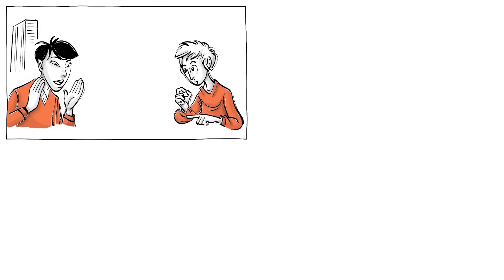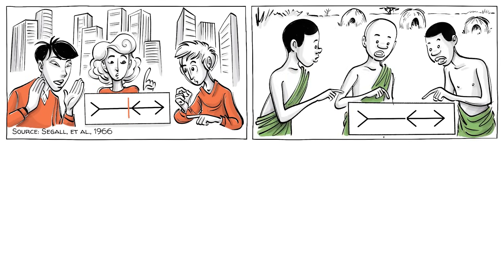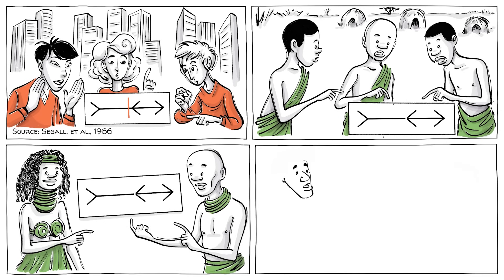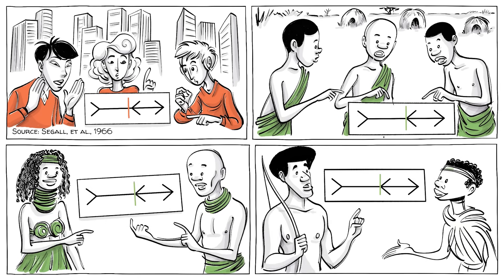People who grew up in spaces with clear corners were fooled most of the time, whereas bushmen from southern Africa, tribespeople from Angola, and Kalahari hunter-gatherers almost always perceive the lines as identical.